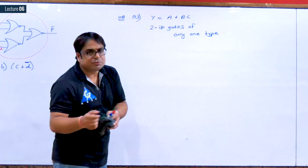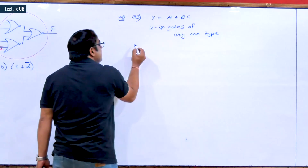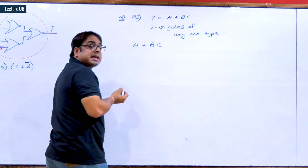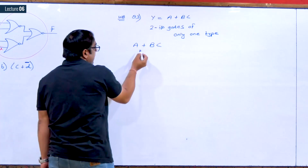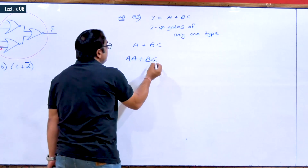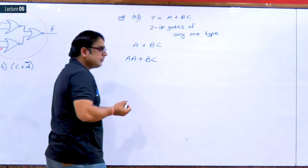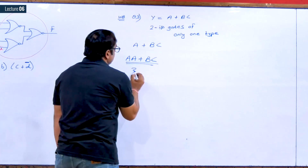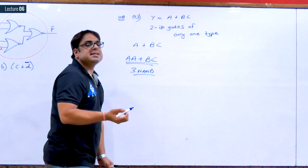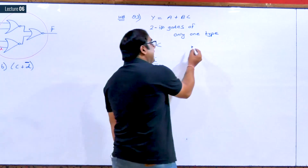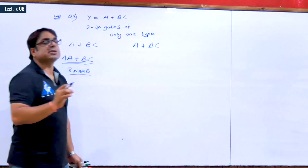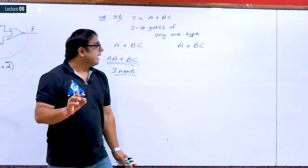A+BC can be written as A·A + B·C, which fits the format AB+CD and can be designed using three NAND gates.